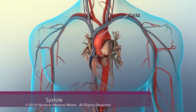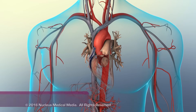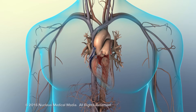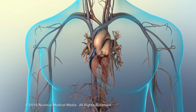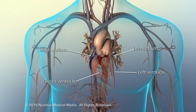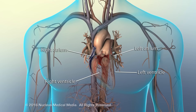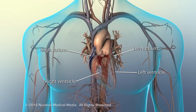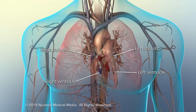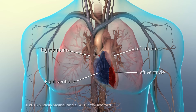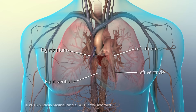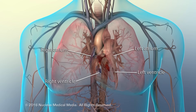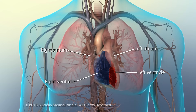After ventricular systole, the cardiac cycle begins again as both the atria and ventricles enter diastole to allow the heart to fill with blood. Normally, this cycle repeats 60 to 100 times a minute.